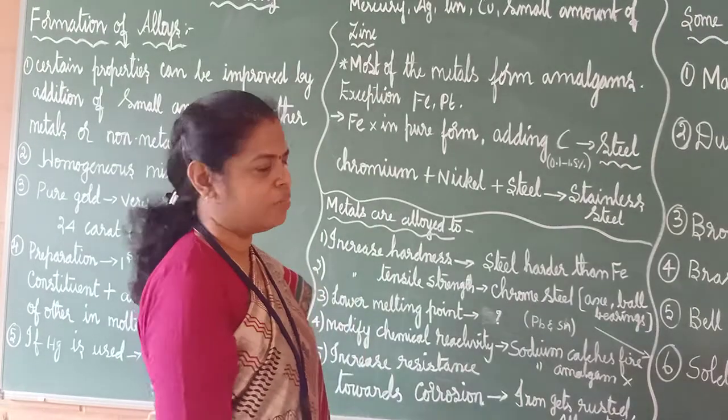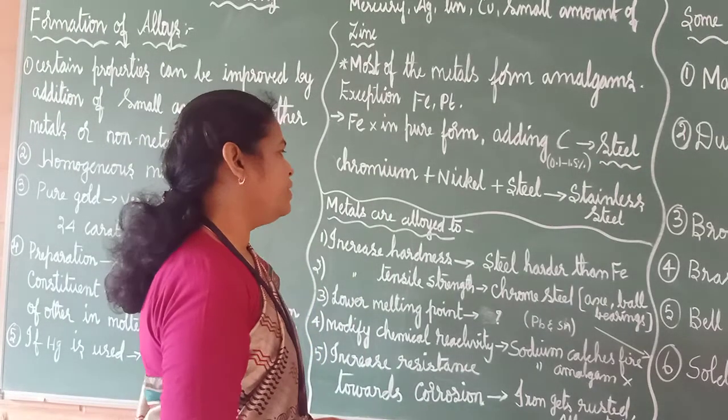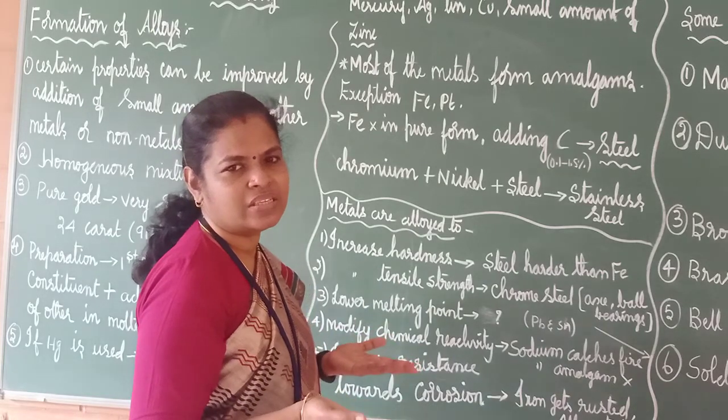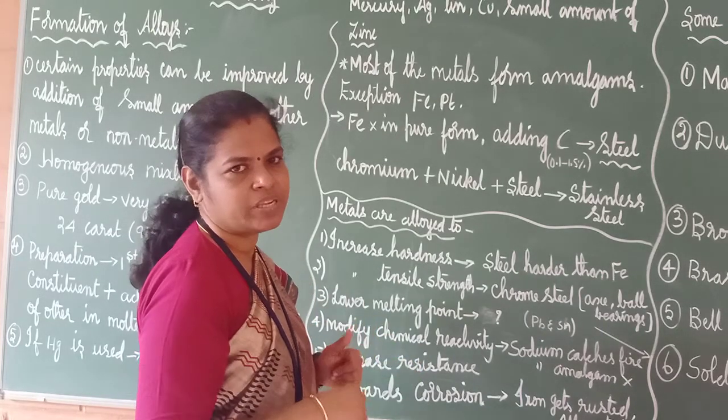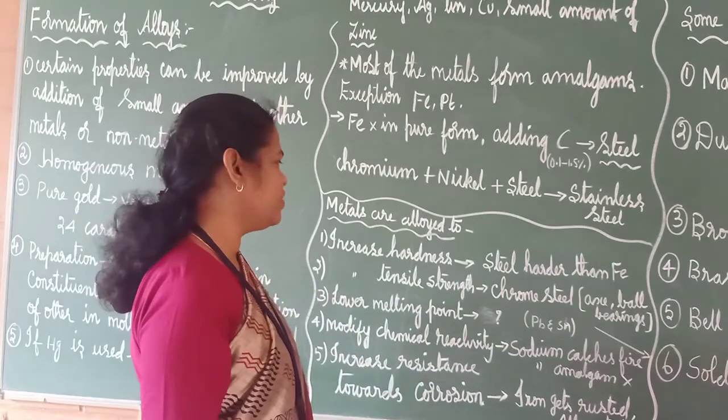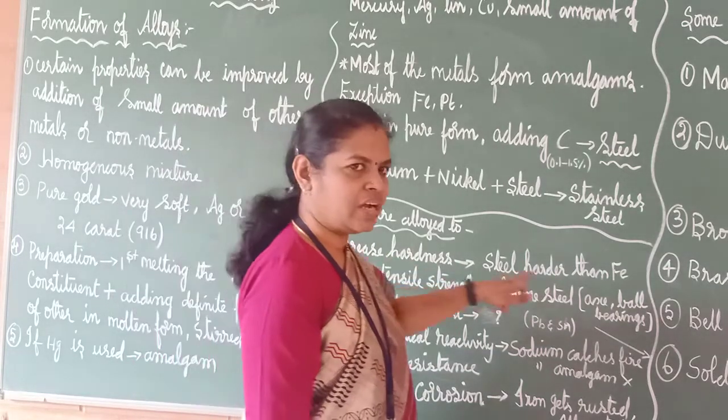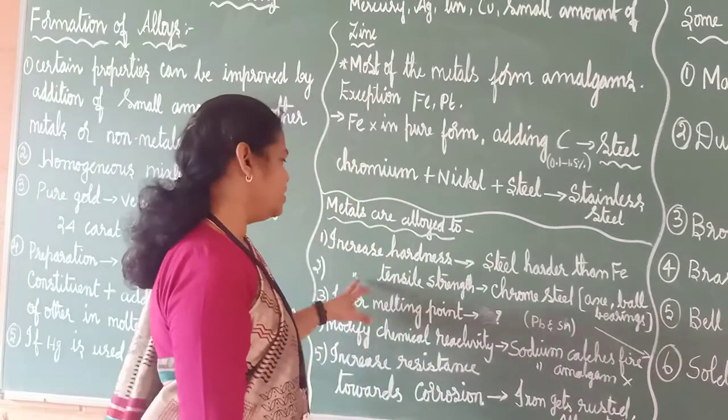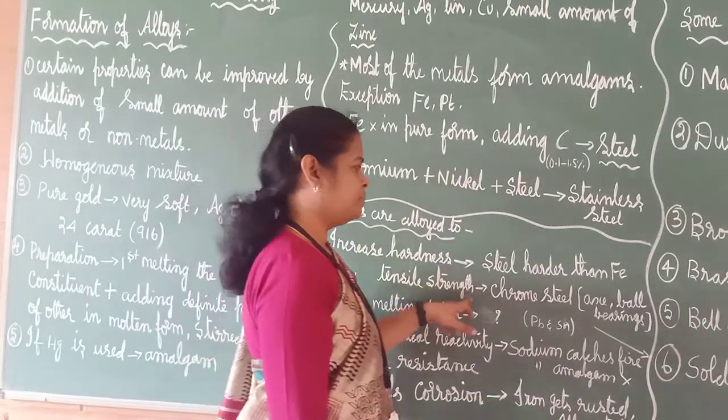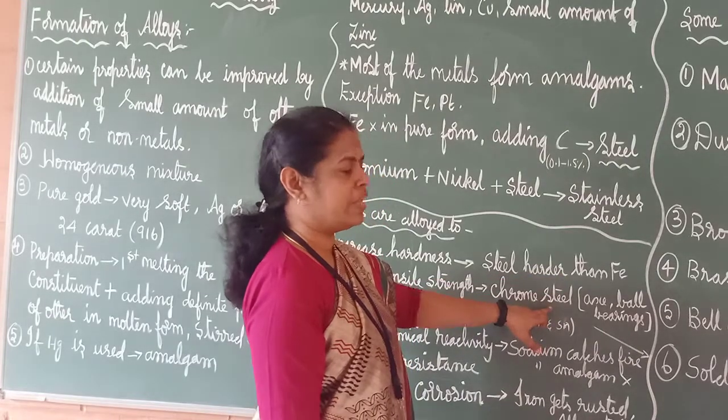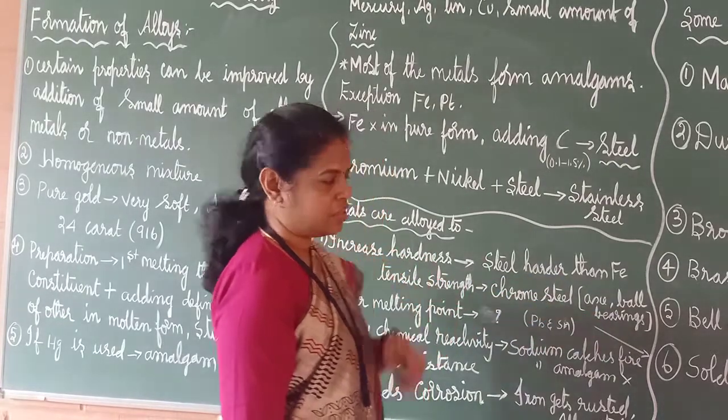Some five points you should study about alloys. Metals are alloyed. Why it should be alloyed? Why unnecessarily we should alloy it instead of having a metal? There should be some reasons. Five important reasons we will take. It will increase the hardness. For example, steel is harder than iron. It will increase the tensile strength. It means chrome steel, when you compare with steel, it is used for making the ball bearings.